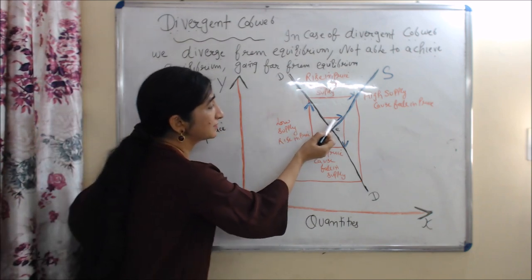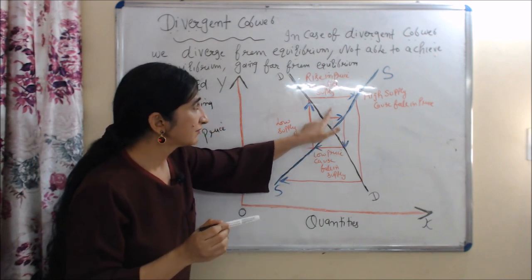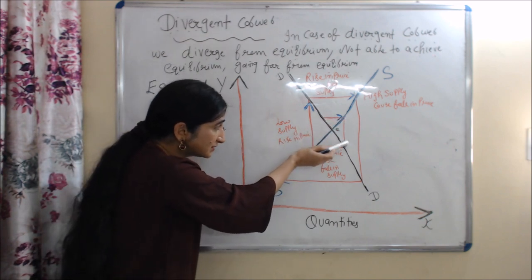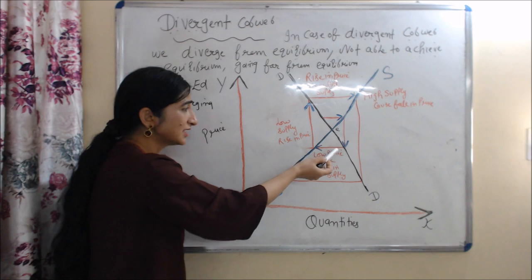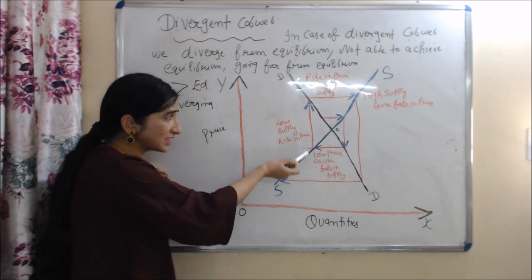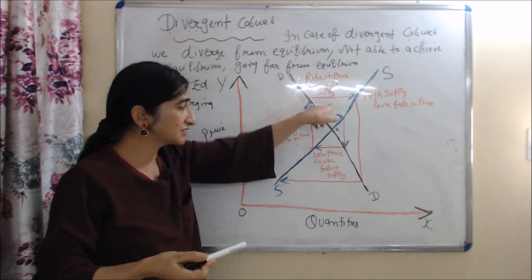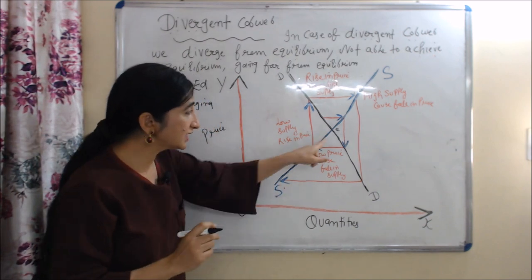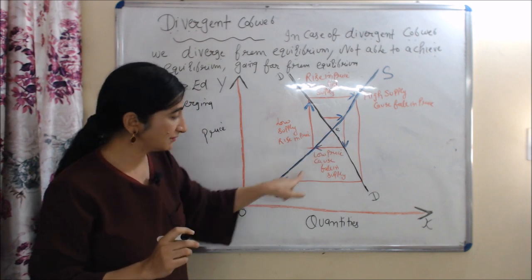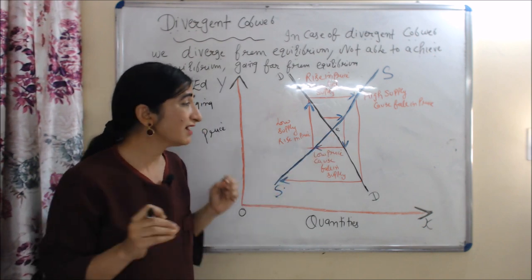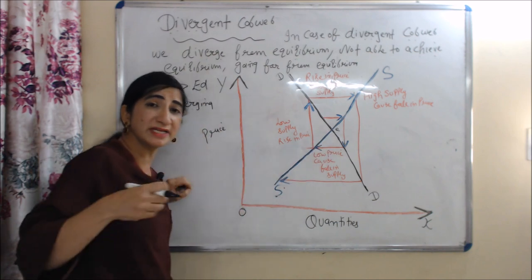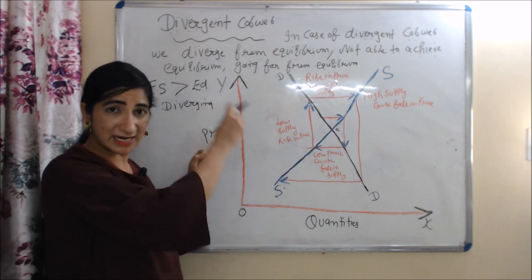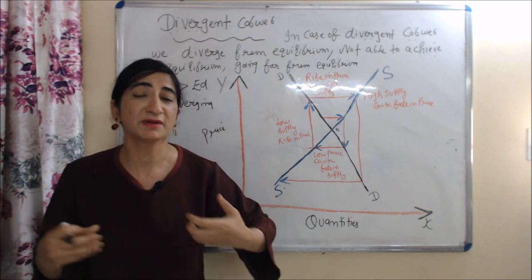Suppose we start from here where a rise in price causes high supply — we move in this direction where high supply causes a fall in price, then we move in this direction, then this direction, and finally we are here. Our equilibrium point is this, and you can clearly see we are very far from our equilibrium point. We have diverged from our equilibrium point — this is exactly divergent cobweb.